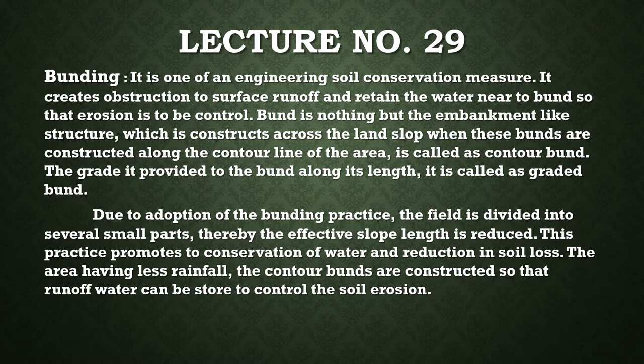Bunding is an embankment-like structure which is constructed across the land slope. When these bunds are constructed along the contour line of the area, it is called a contour bund. The boundary line of equal elevation in the area is called the contour line.